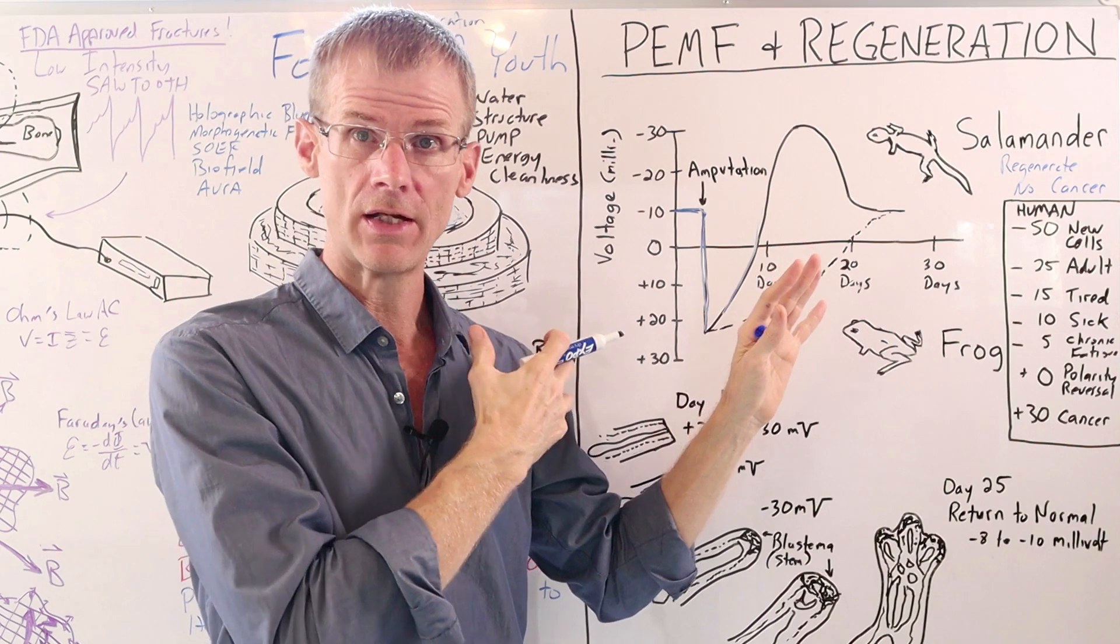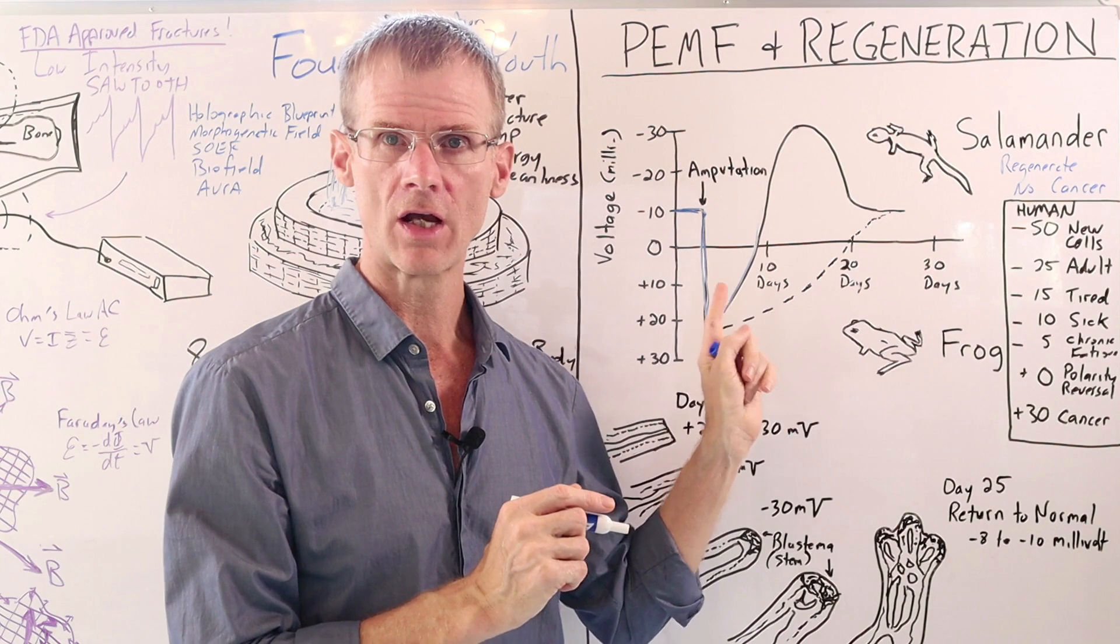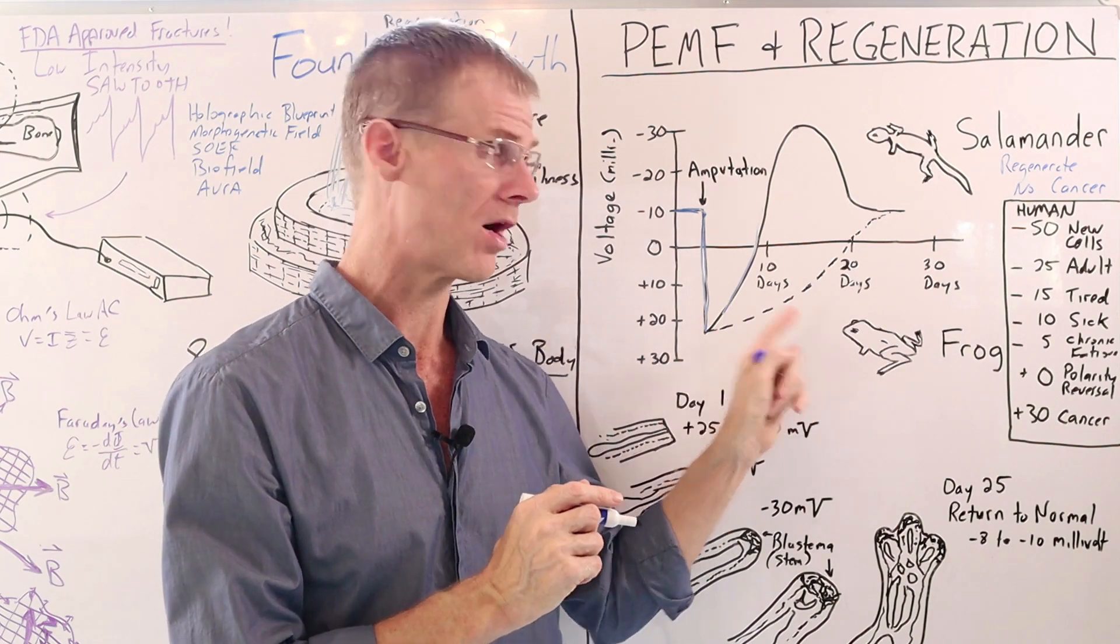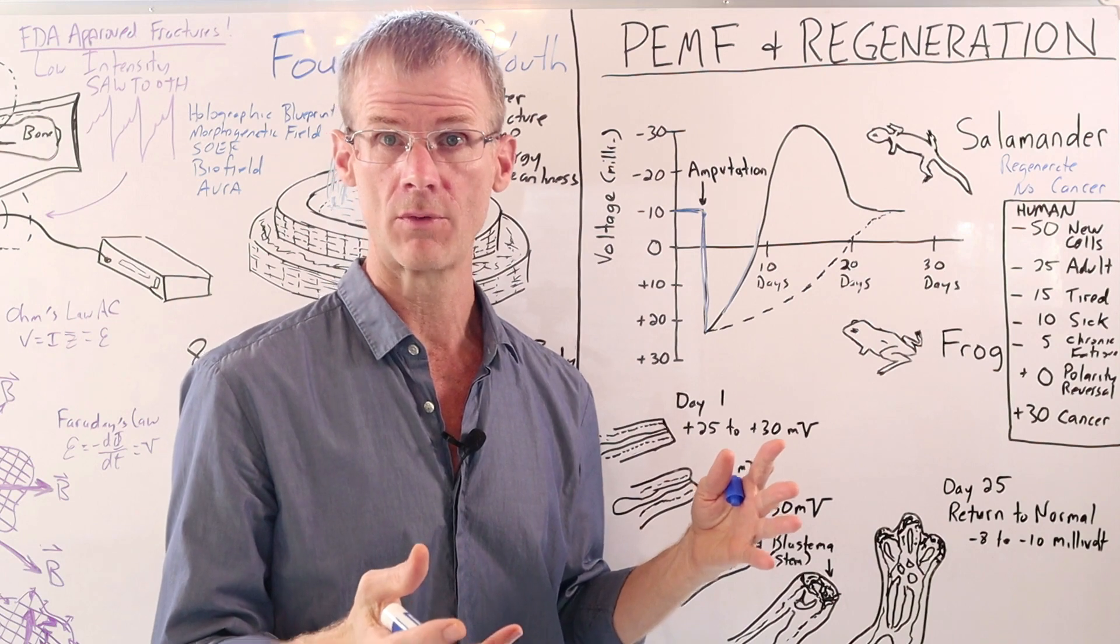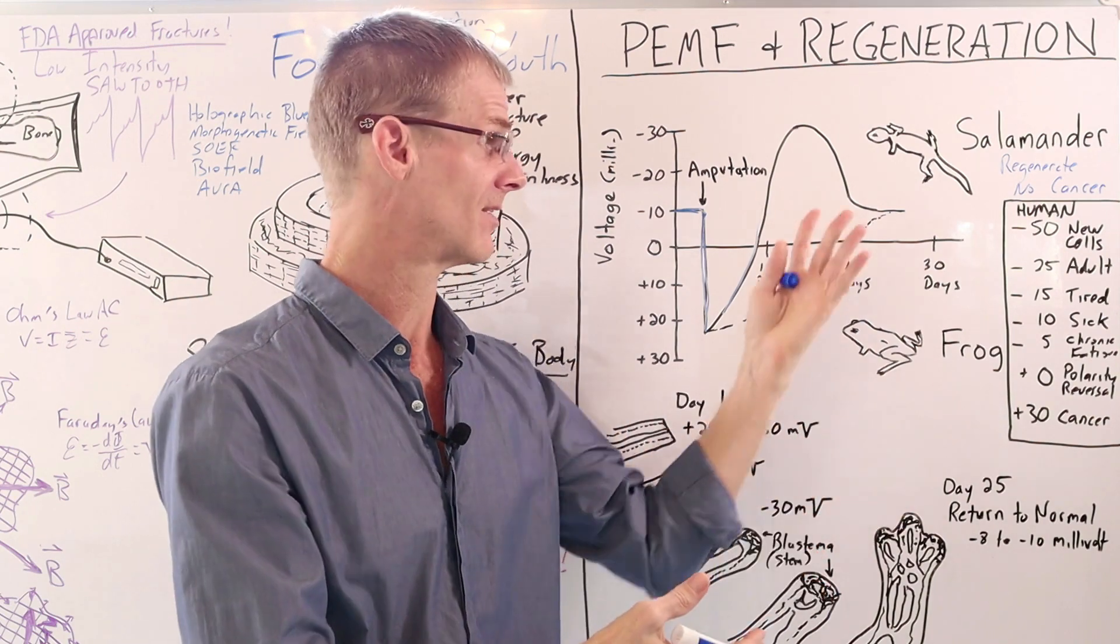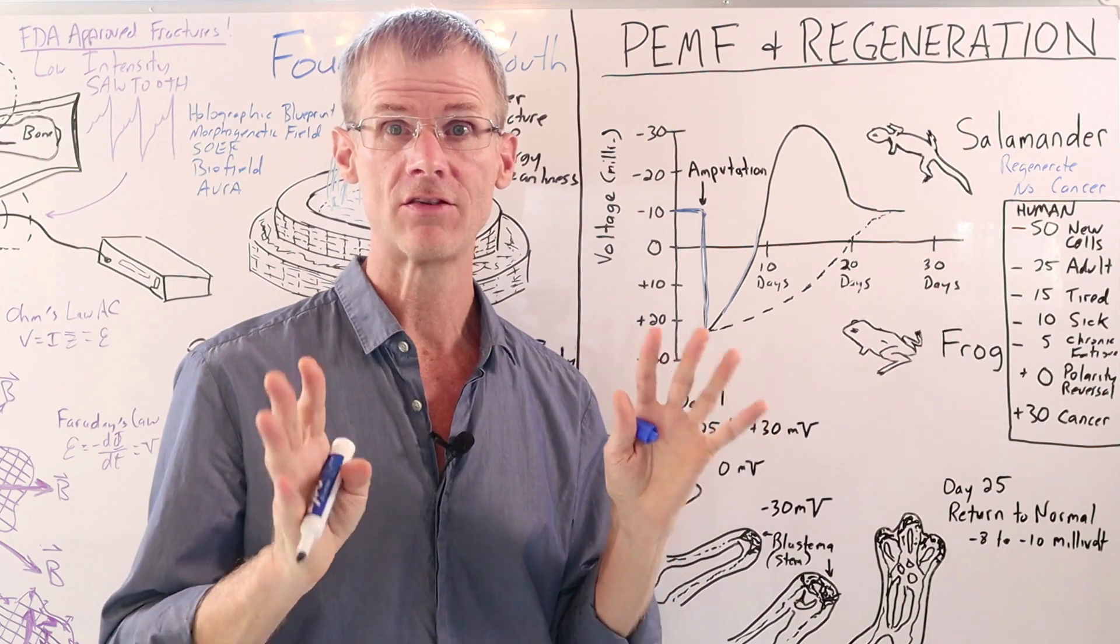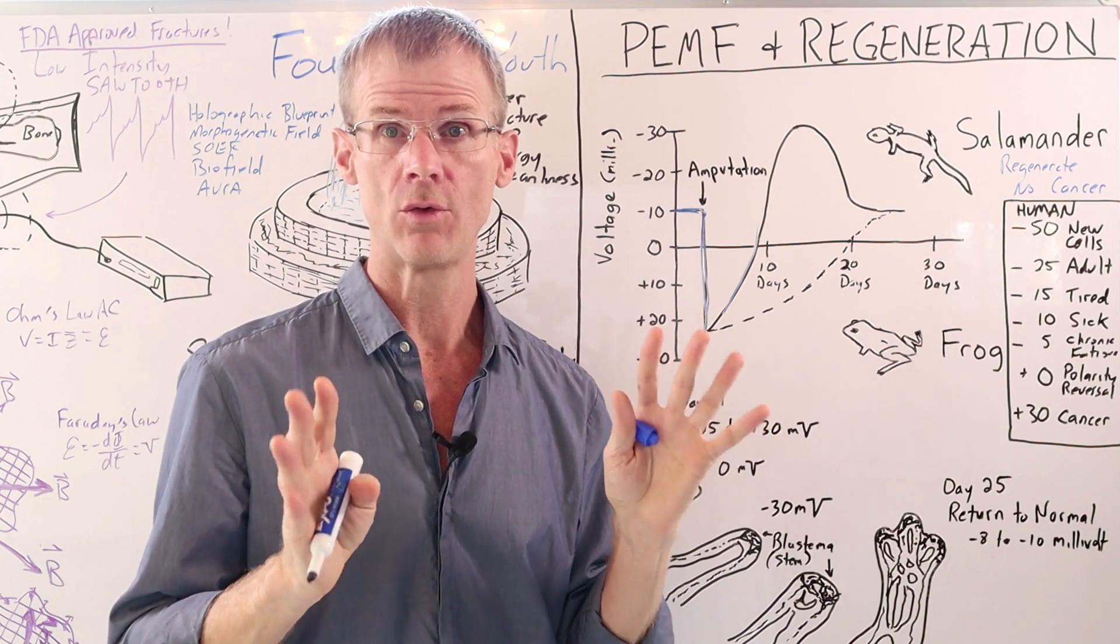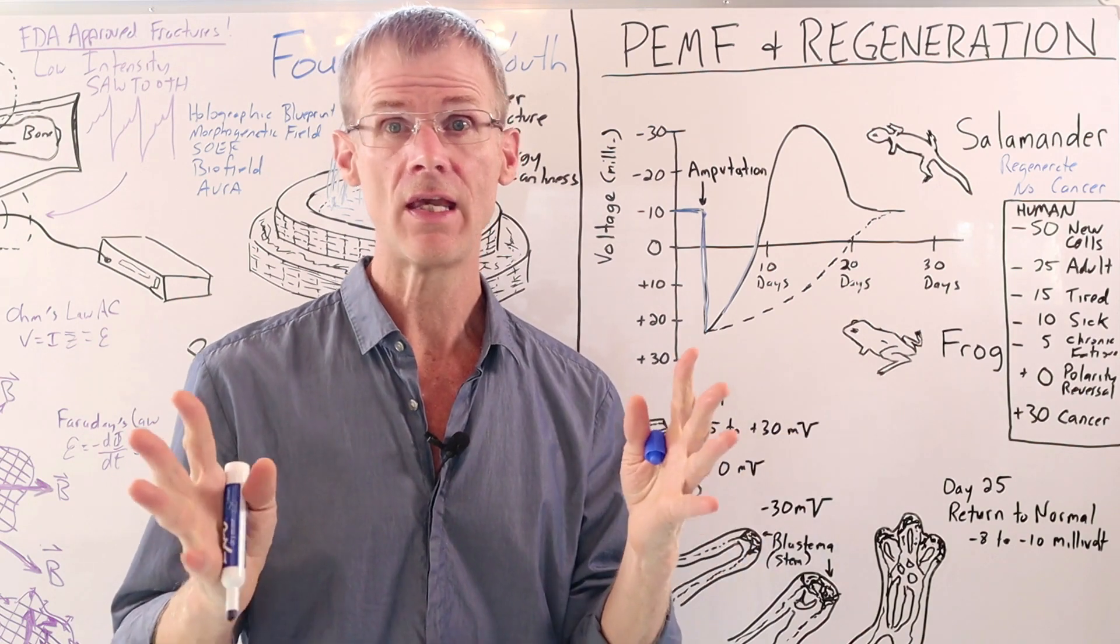And it was this energy that Robert Becker found is what really stimulated regeneration. So Becker wondered if a current was supplied to the frog stump, what would happen? I mean, could we stimulate regeneration in the frog with giving it more energy like the salamander is naturally able to do? And what he found was that when he supplied a low frequency and low intensity current, the frog's arm regenerated just like the salamander.